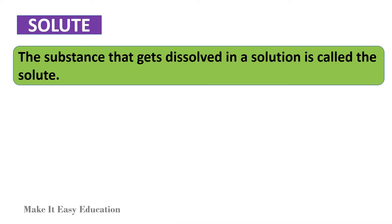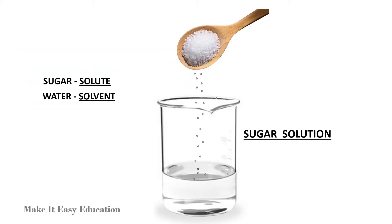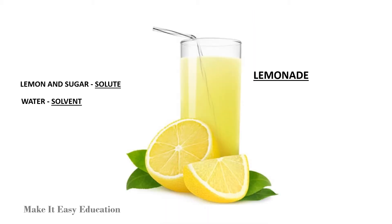The substance that gets dissolved in a solution is called the solute. The substance that dissolves the solute to make a solution is called the solvent. In a sugar solution, the sugar is the solute and water is the solvent. In lemonade, the lemon juice and sugar is the solute, and water is the solvent.